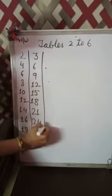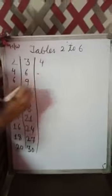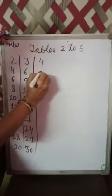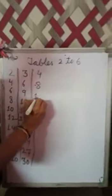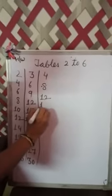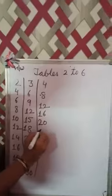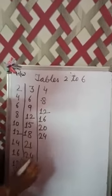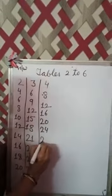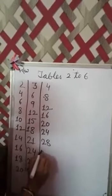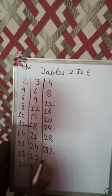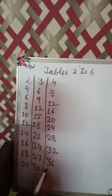Now table of 4. 4 times 1 is 4. 4 2's are 8. 4 3's are 12. 4 4's are 60. 4 5's are 20. 4 6's are 24. 4 7's are 28. 4 8's are 32. 4 9's are 36. 4 10's are 40.